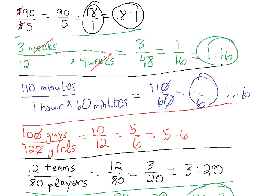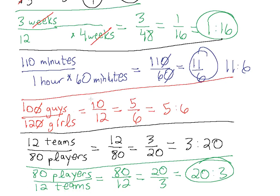If we're dealing with quantitative values, such as dollars and time and minutes, we can actually simplify those. We can convert them into the same units before we simplify. If we're dealing with qualitative units, such as guys, girls, teams, players, something that can't be converted into the other, we actually just go ahead and simplify the fraction and get a numerical comparison. So review these a few times, and I'll see you in the next video.